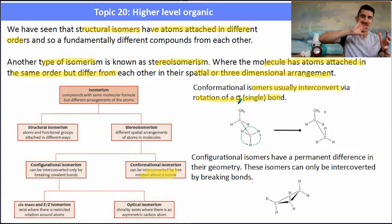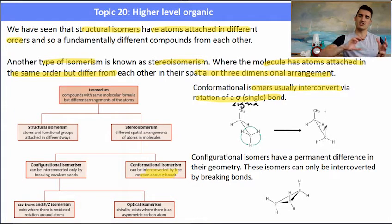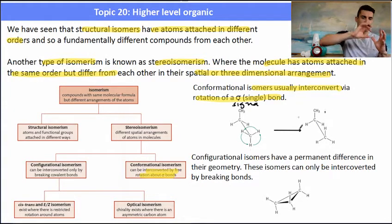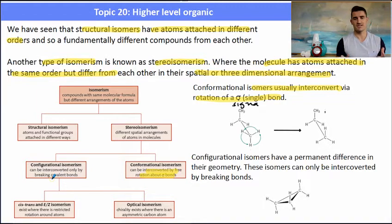Conformational isomers are where we can simply rotate a bond and that would form the same thing. They are generally things with single carbon-to-carbon bonds, and if we simply rotated one of the bonds around we could form the isomer of the other thing. So essentially just rotation — that's a conformational isomer.